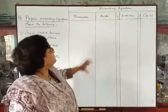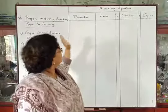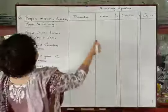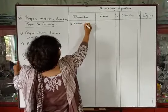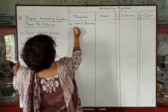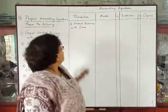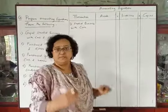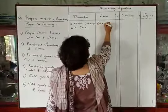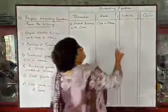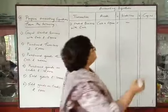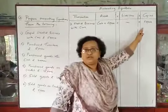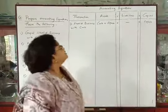This is the table we have to prepare. The first column is for the transaction, and then we have the accounting equation: Assets = Liabilities + Capital. First transaction: Gopal started business with cash rupees 50,000. This means the asset of the business — cash — is increasing. So cash = 50,000. There is no liability, so dash. And capital will be rupees 50,000, because Gopal has given rupees 50,000 to the business, which is liability towards the owner.